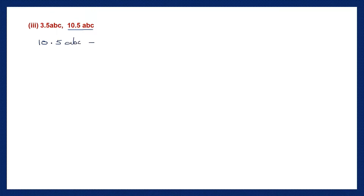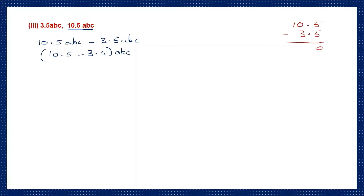The next one: 3.5abc and 10.5abc. So this is the second term and it has to come first: 10.5abc minus 3.5abc, which is 10.5 minus 3.5abc. 5 minus 5 is 0, put the point, now borrow — 10 minus 3 is 7. So here we have 7abc.